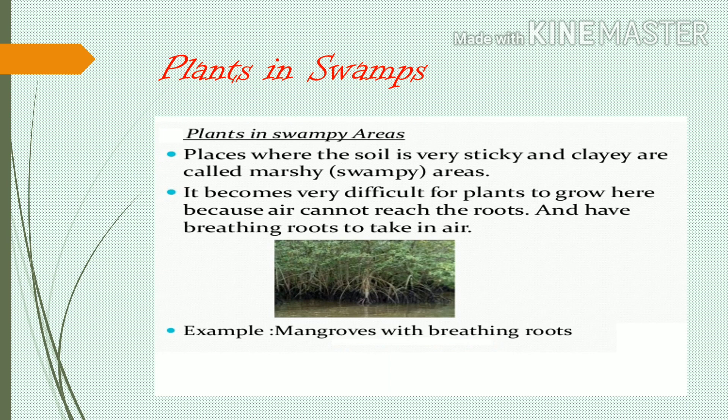Plants in swamps. Swamps or marshy areas have clayey soil which is sticky and contains a lot of water. Mangrove plants grow in swamps. It becomes very difficult for plants to grow there because air cannot reach the roots, so they have breathing roots to take in air. Breathing roots also help to absorb water and minerals required to carry out photosynthesis.